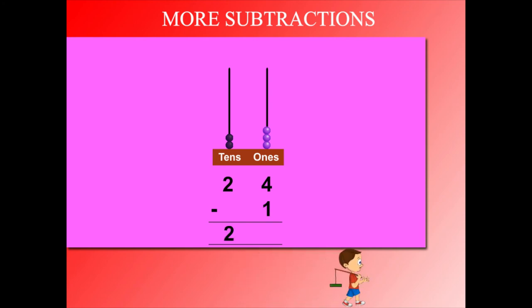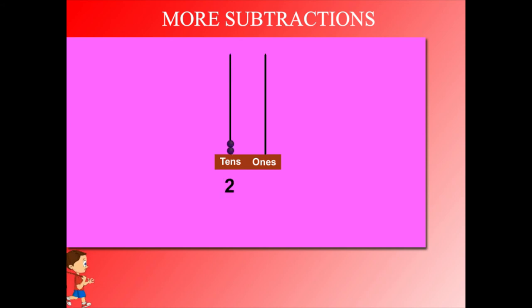How many left? 2 tens and 3 ones. This is 23. Now we have 2 tens and 4 ones, making 24.